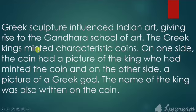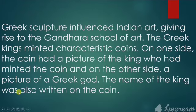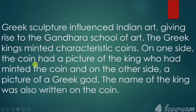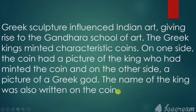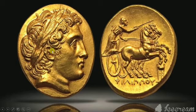The Greek kings minted characteristic coins: one side of the coin had a picture of the king who minted it, and on the other side a picture of a Greek god. The name of the king was also written on the coin — not just the picture but the name too. This is the Alexander silver coin; you can also see it in your textbook.